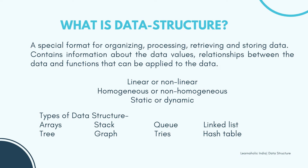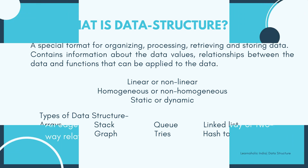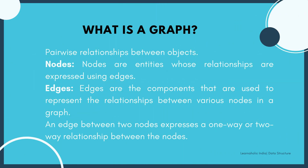Next is hash table. A hash table or hash map stores a collection of items in an associative array that maps the keys to values. A hash table uses a hash function to convert an index into the array or bucket that contains the desired data item.